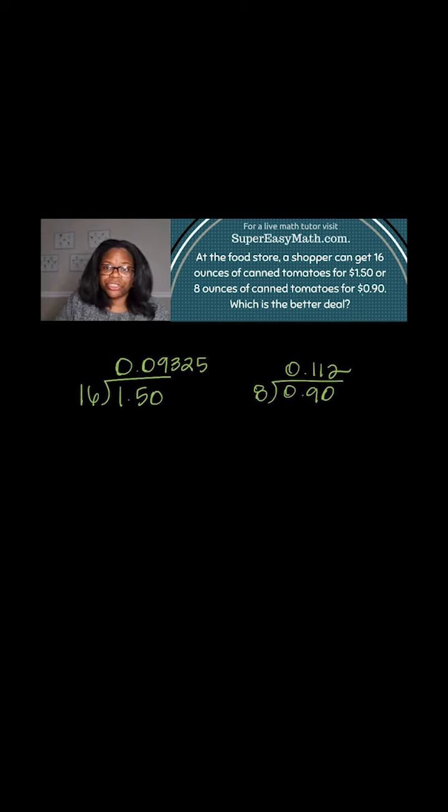Well, to calculate this, what you're going to do is take your 16 ounce can of tomatoes, which costs $1.50, and divide it, which will give you this number. And then you're going to take your 8 ounce can and divide it by the $0.90, which will give you this number.